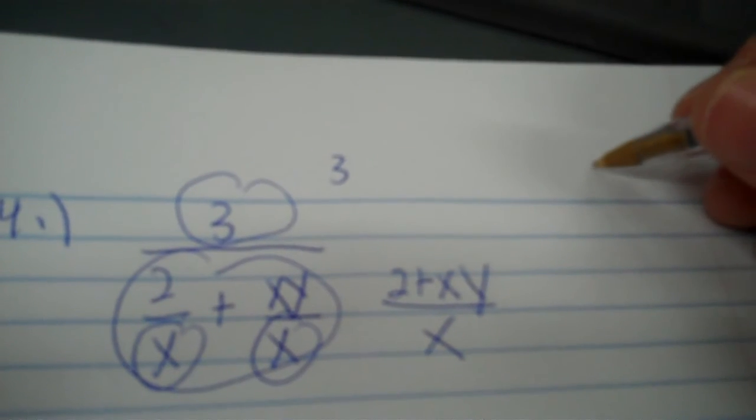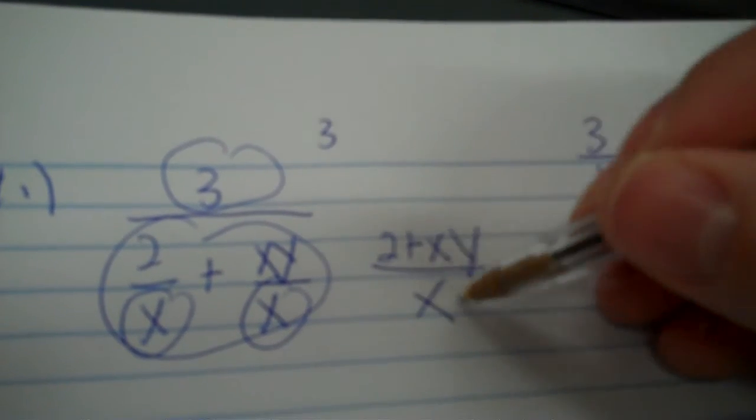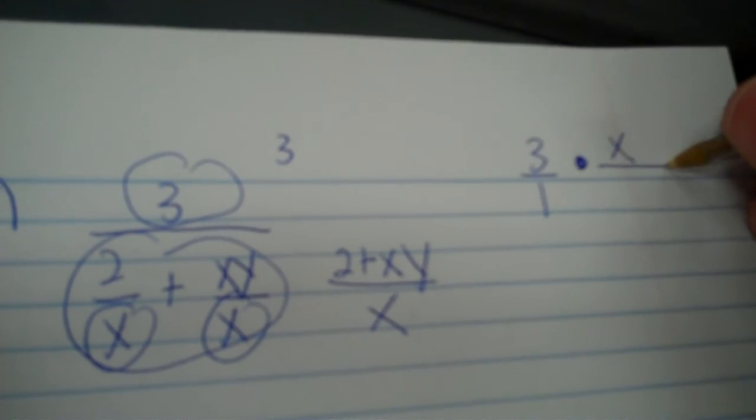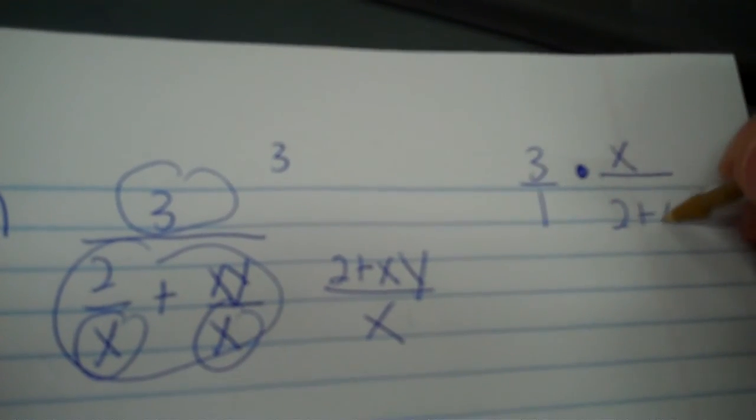Okay, so I have three. You put a one under the three times. And then you reciprocate that to x over two plus xy.